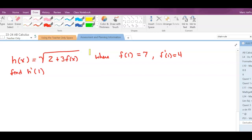In this case, hopefully you're getting good at identifying the chain rule. Our inner function, u, would be 2 plus 3f of x, and our outer function would be the square root of u, or u to the one-half.